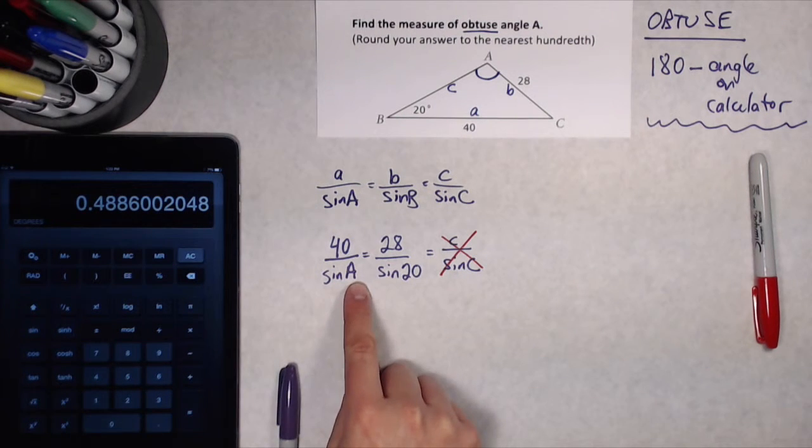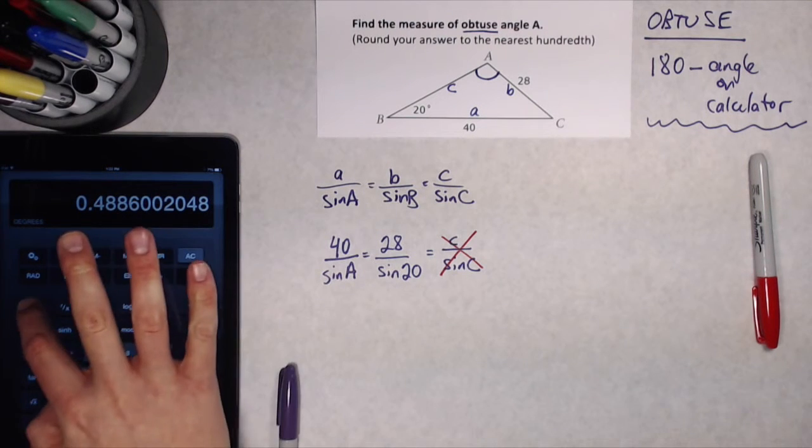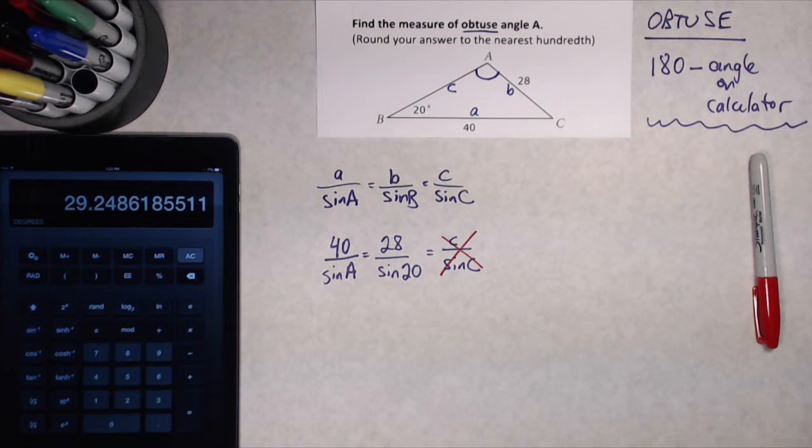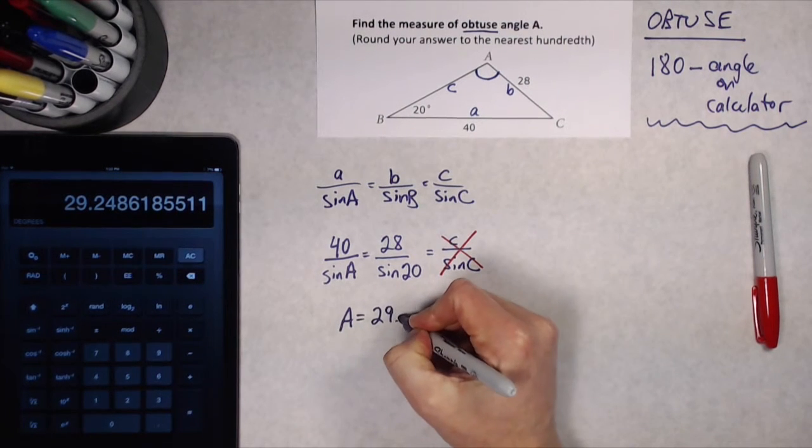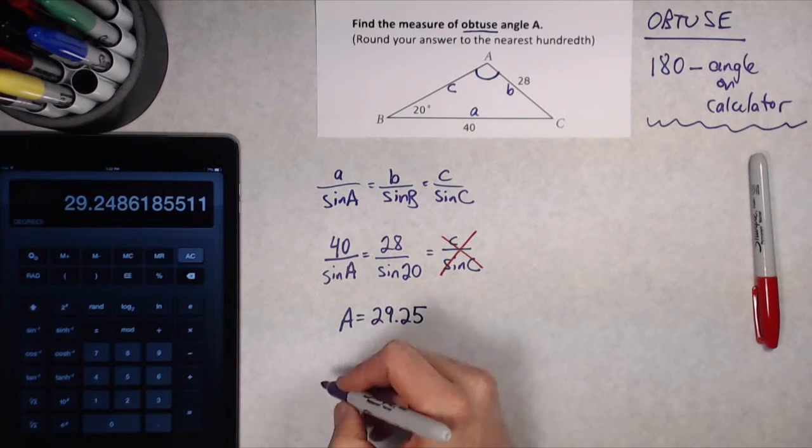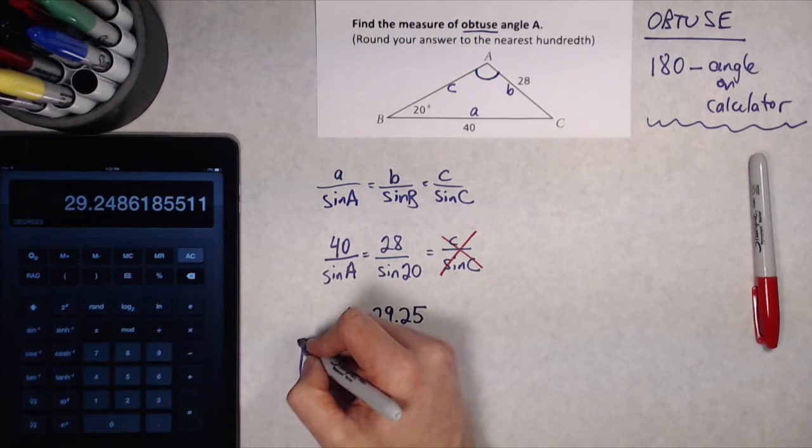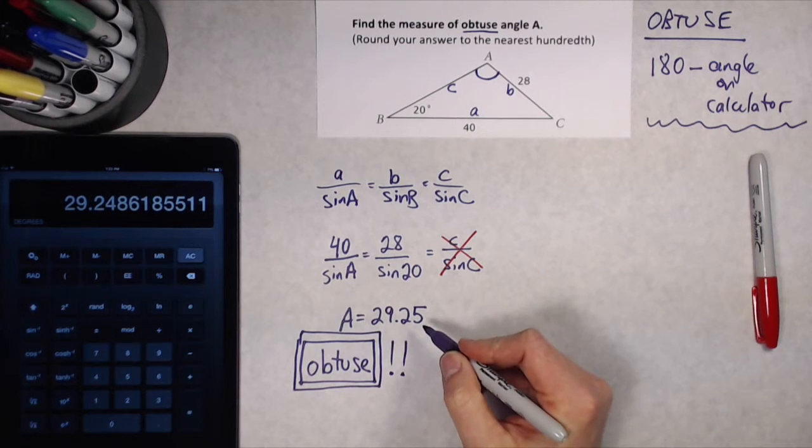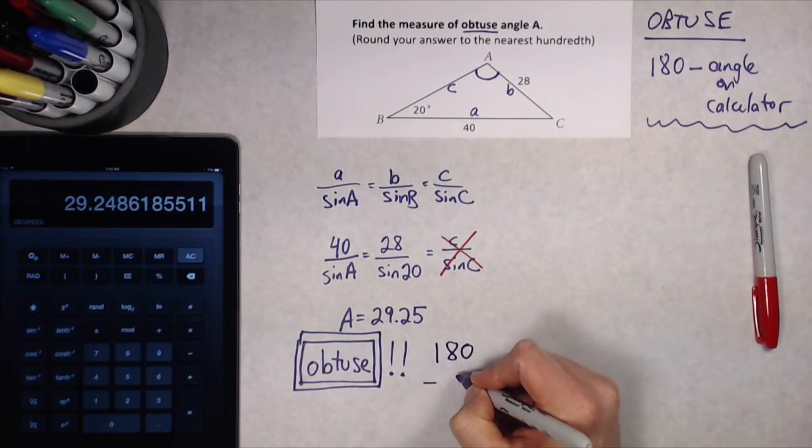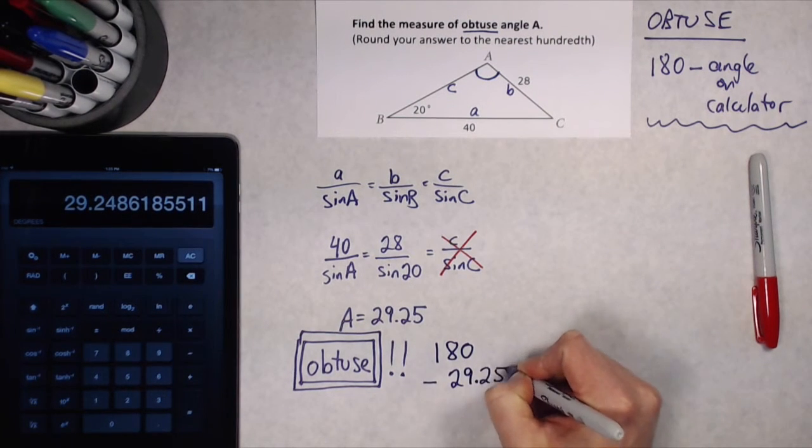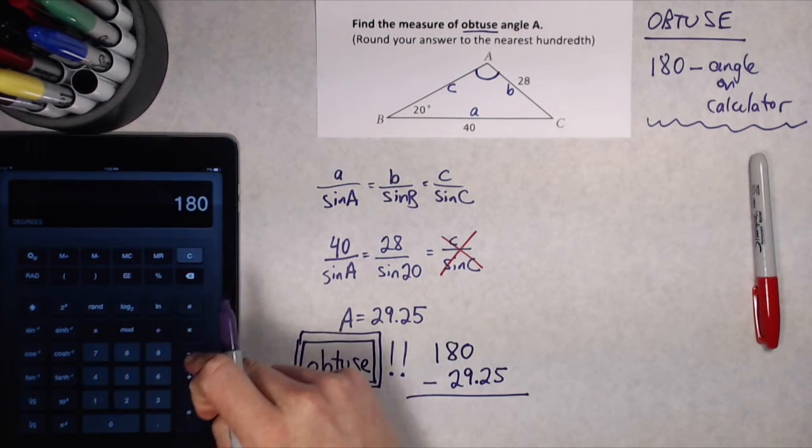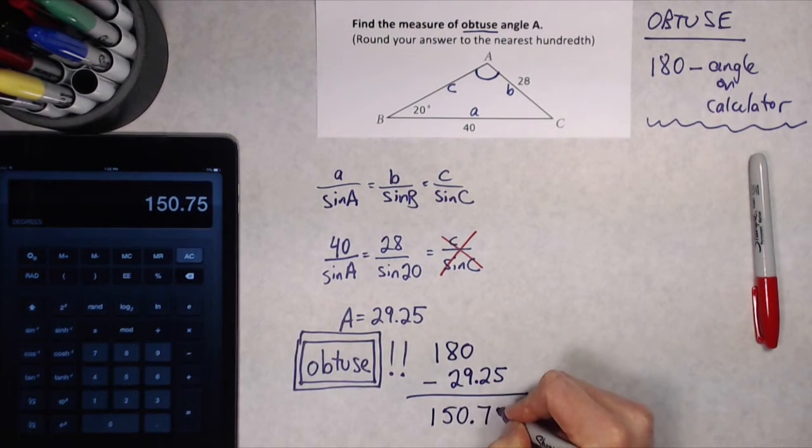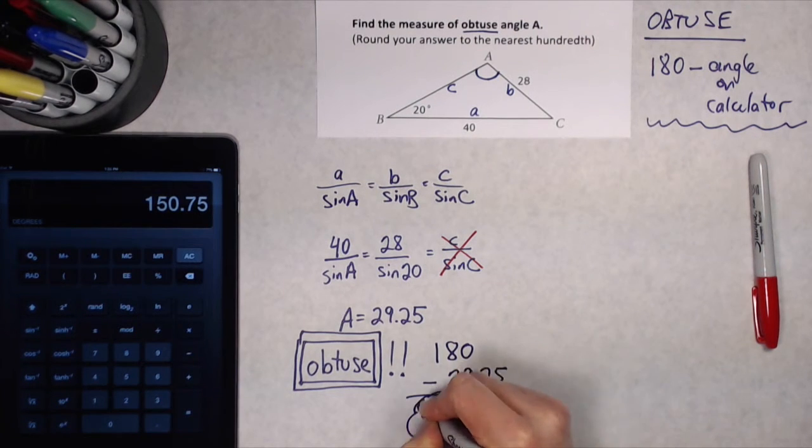So remember, that's the sine of angle A. The last step when you're finding an angle is to do the shift or second function sine. That's the sine minus one. And when I hit that, 29.25 is what I get. Now don't forget, I was looking for an obtuse angle. And 29.25 is acute, meaning it's lower than 90. So what I've got to do for obtuse is 180 minus 29.25 to get the answer. So if I go to my calculator, 180 minus 29.25 leaves me 150.75 degrees. And that makes a lot more sense as an obtuse angle.